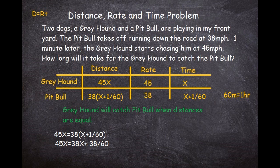To isolate x, subtract 38x from both sides. The 38x cancels on the right, and on the left we get 45x minus 38x equals 7x. So 7x = 38/60. Divide both sides by 7: x equals 38/60 divided by 7, which gives x = 0.09 hours. Remember, this is in hours because our time unit was hours.